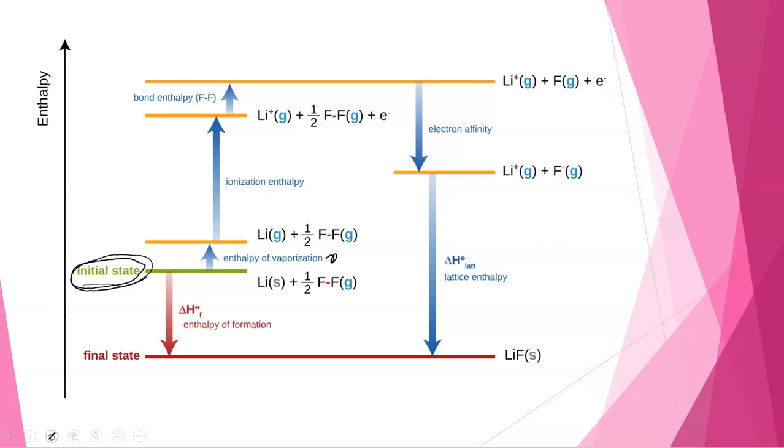The second step is the ionization enthalpy. That is where our lithium gas becomes lithium cations, still in the gas phase. At that point we're going to actually break our fluorine-fluorine bond. So the bond enthalpy of fluorine gas is the next step.